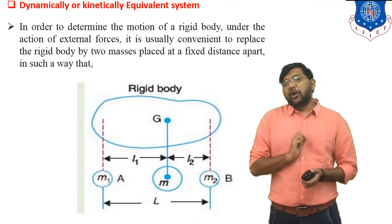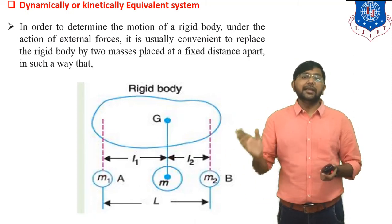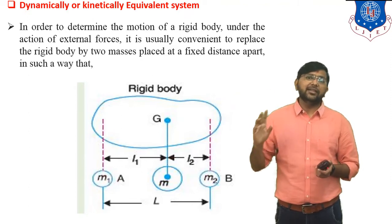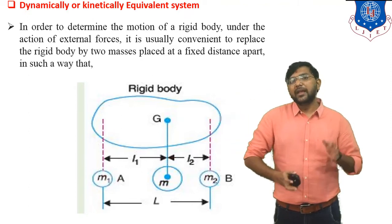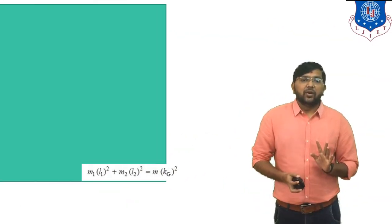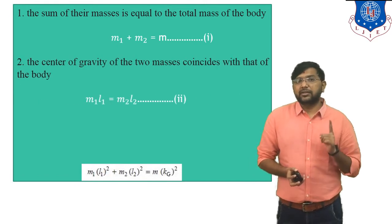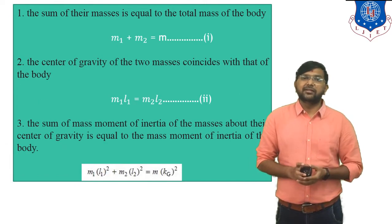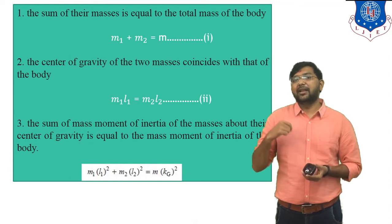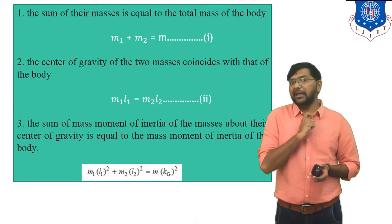For any body to be considered dynamically or kinetically equivalent, three conditions must be satisfied. Only when these three conditions are satisfied can we consider any body to be a dynamically or kinetically equivalent system.